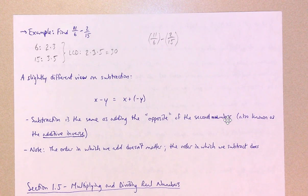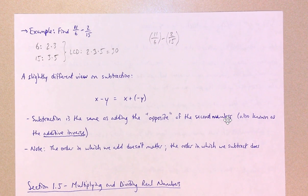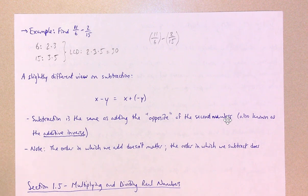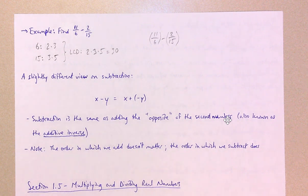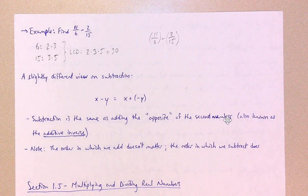To wrap up this video, here's a slightly different way to look at subtraction. If you're going to take the difference of two quantities, say x minus y, that is the same thing as x plus negative y. Subtraction is really just adding the opposite of the second number onto the first. There is a special mathematical term for this opposite — it's called the additive inverse. We'll be seeing that again very shortly.